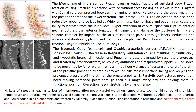This causes the spinal cord to get compressed between the lamina of the upper vertebra and the upper margin of the posterior border of the lower vertebra, which is called the internal gibbus or step. The dislocation can occur and be reduced by rebound force — this is labeled as the whiplash injury.